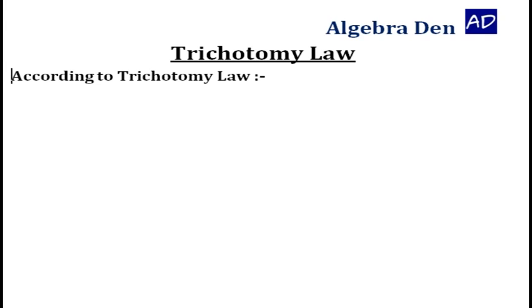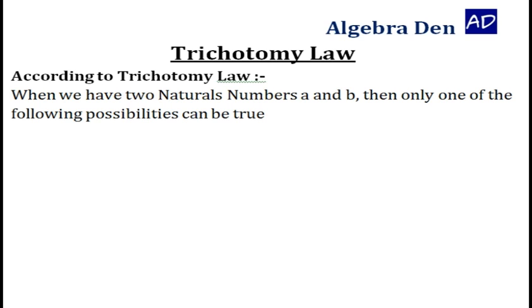Trichotomy Law. According to Trichotomy Law, when we have two natural numbers A and B, then only one of the following possibilities can be true.